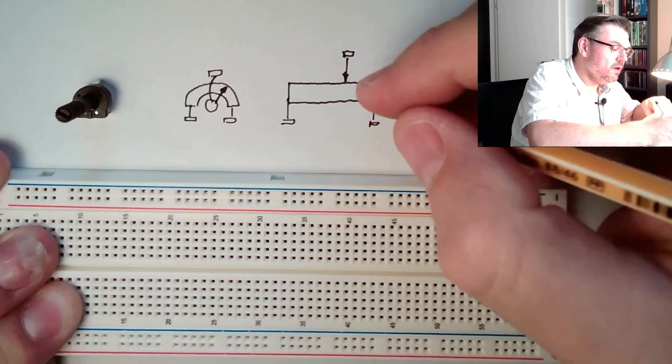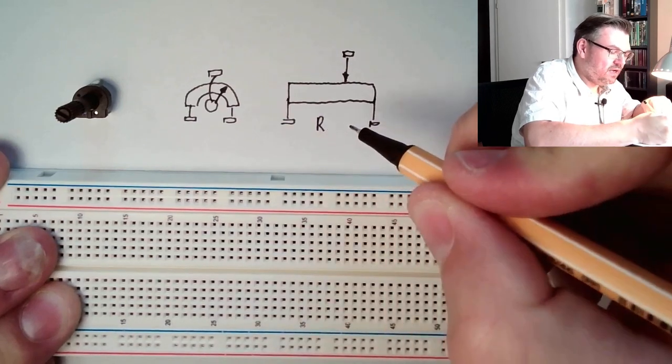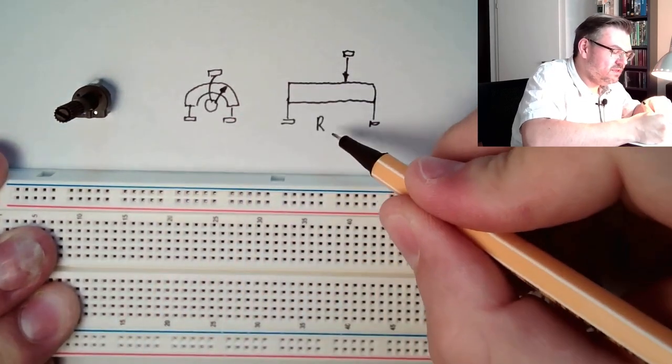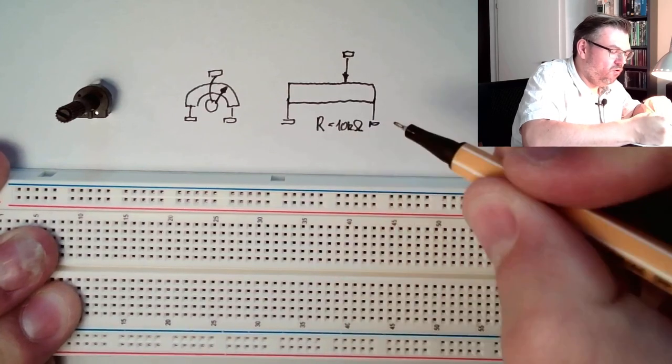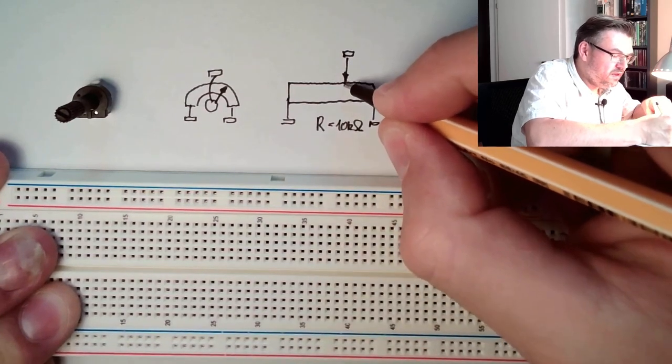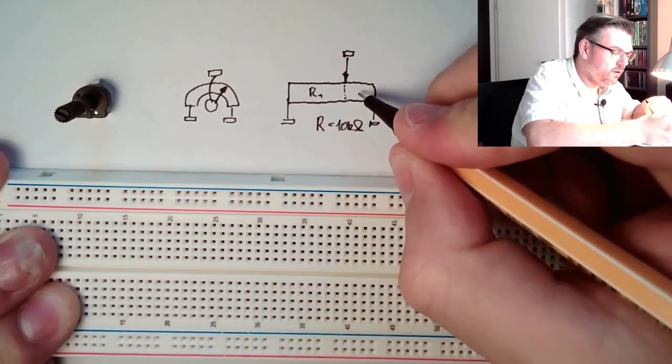So what it actually does: this has a resistance R, and in this case this is 10 kilo ohms, and this thing here is dividing this whole R into one R1 and one R2.